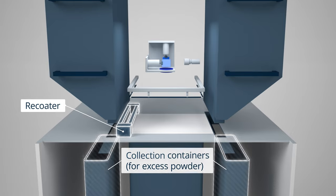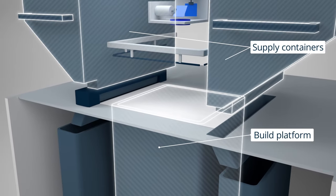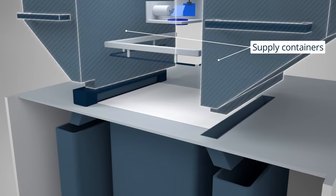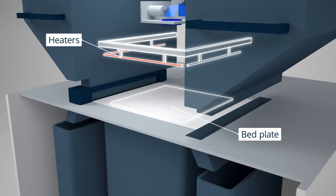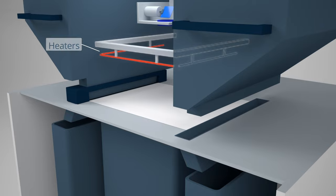A thin layer of the powder is distributed on top of the build platform from a supply container. The build chamber and bed plate are heated to just below the plastic's melting temperature. This makes it easier for the laser to solidify the part.